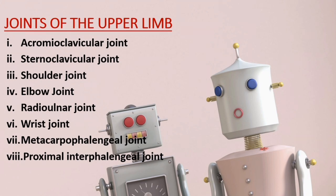Joints of the upper limb. The joints of the upper limb include: acromioclavicular joint, sternoclavicular joint, shoulder joint, elbow joint, radio ulnar joint, wrist joint, metacarpophalangeal joint and proximal interphalangeal joint.